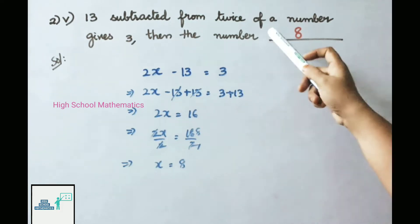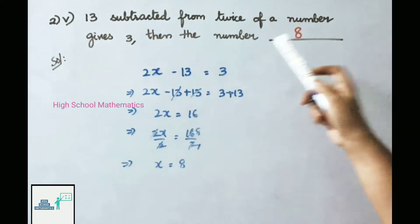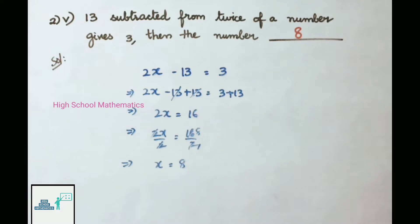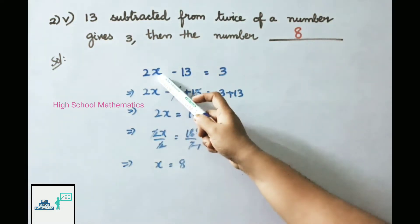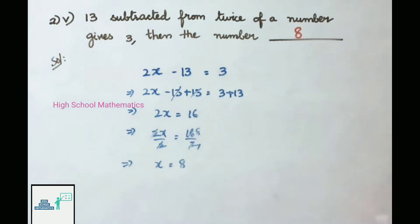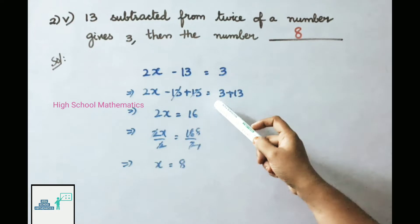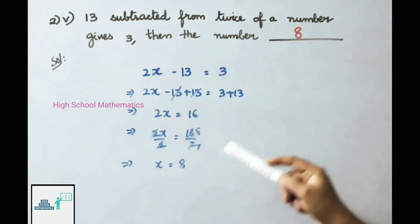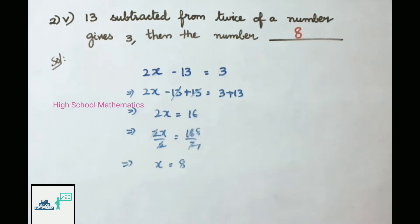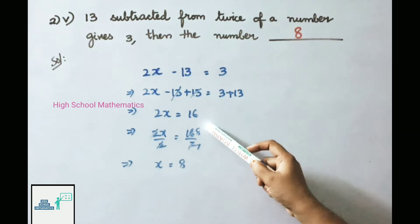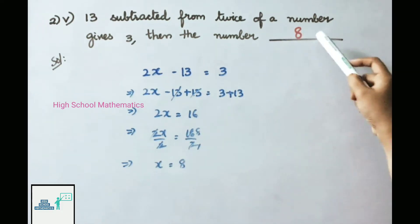Fifth: 13 subtracted from twice a number gives 3. Find the number. Let the number be x. Twice a number is 2x, so 2x - 13 = 3. Adding 13 on both sides: 2x = 3 + 13 = 16. Dividing by 2: x = 16 ÷ 2 = 8. Therefore the number is 8.